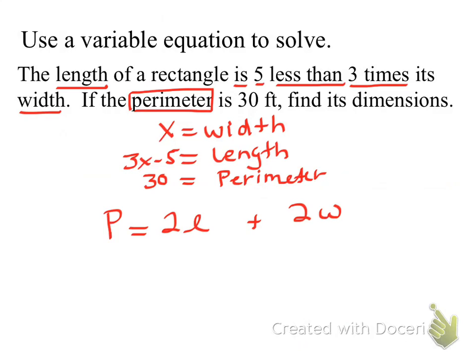Now, I can start substituting. What am I going to sub in? You're going to do 3X minus 5 times 2. How about from left to right? What do I sub for the P? For P, you would do 30. 30 equals 2 times what? 3X minus 5. And we say 2 times the quantity 3X minus 5 when we have those parentheses. Plus 2X.